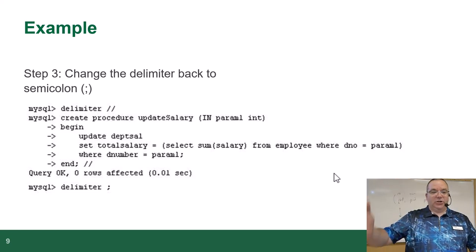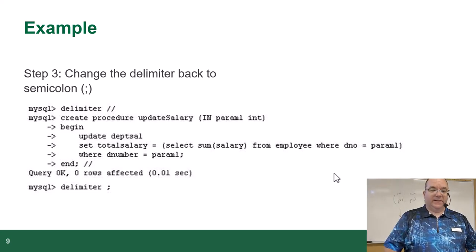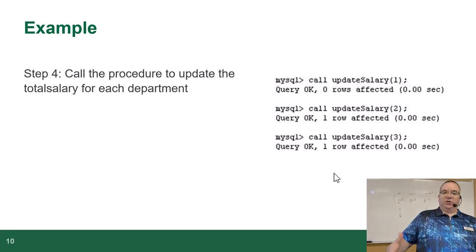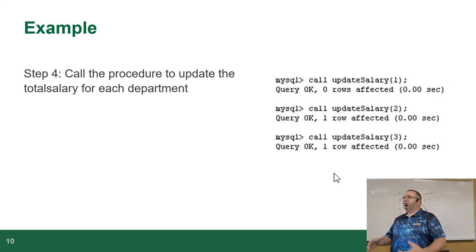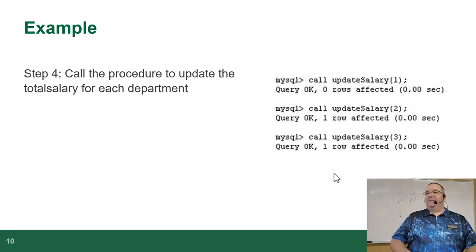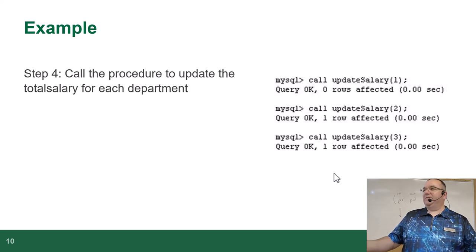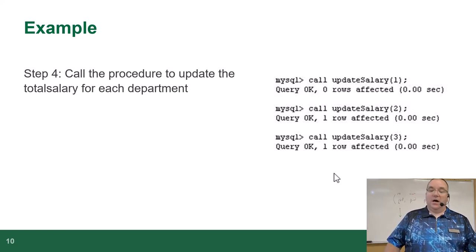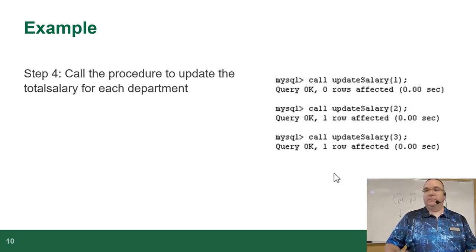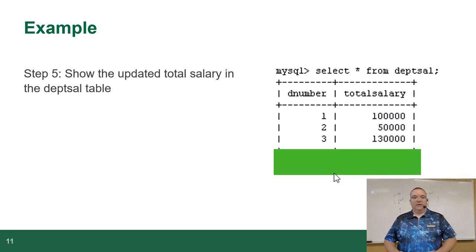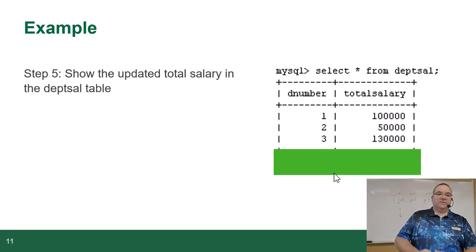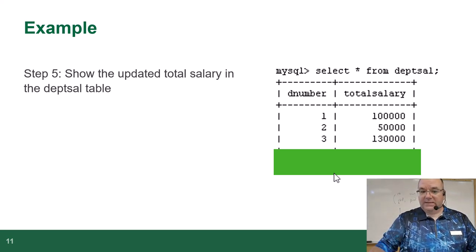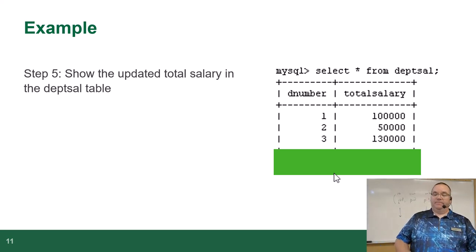Then we can call it. Notice this isn't SELECT — it's CALL, which is why you can't use it in a join. Joins are used in SELECT statements. CALL literally executes the procedure. You do CALL update_salary(1), CALL update_salary(2), CALL update_salary(3), and it will update the appropriate table. The results show the department salary table updated.